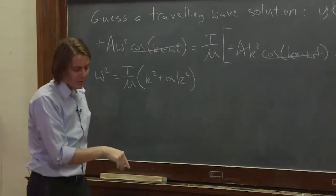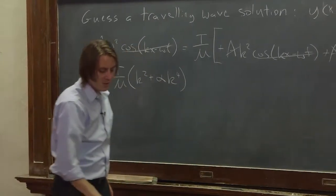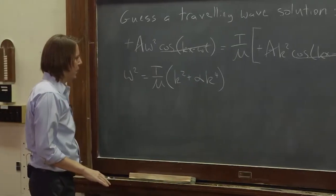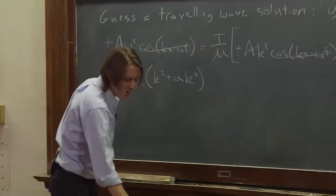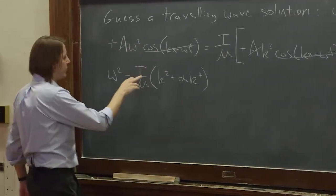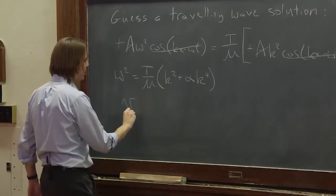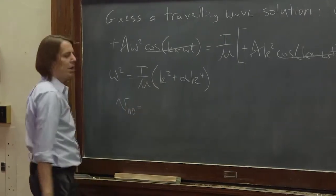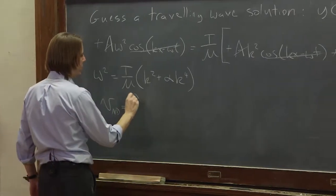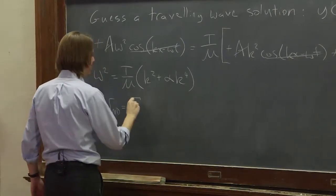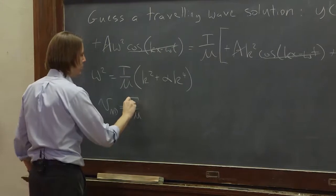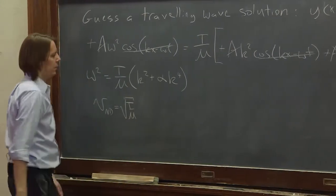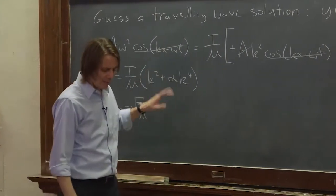So that's what the equation of motion said, is that those have to be equal to each other. So we can say, well, this is the old velocity we used to talk about, so we're going to call that v and I'm going to put ND. The non-dispersive velocity was the square root of the tension over μ.